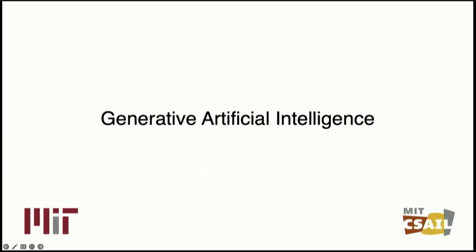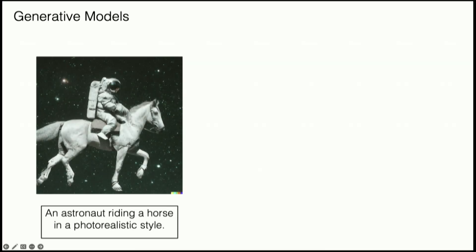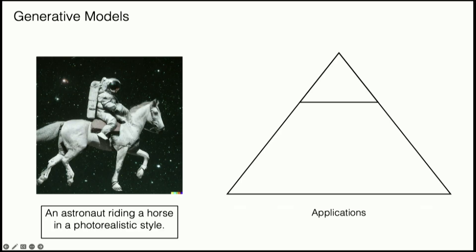I'm really excited to share some of my thoughts on generative models right now. Generative models are one of the hottest things in machine learning as well as in the startup scene. In the past couple of months, there's been this proliferation of text-to-image AI generators. If you give a prompt like an astronaut riding a horse in a photorealistic style, you get a really stunning image in less than 10 seconds. You can do all types of different prompts and different art styles. But what I really want to talk about is how this is just one of the possible applications of generative models.